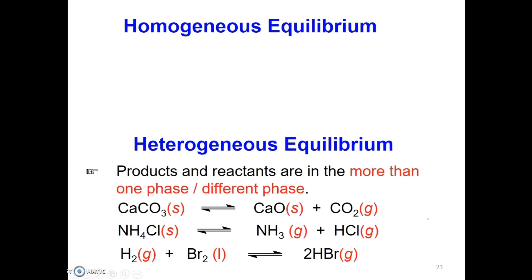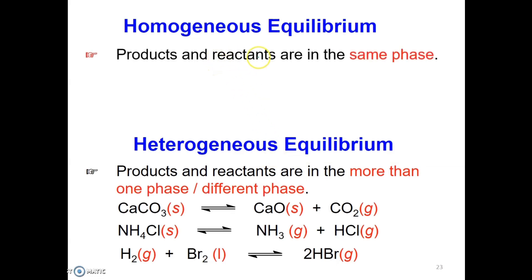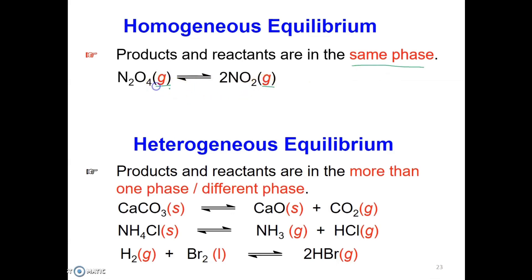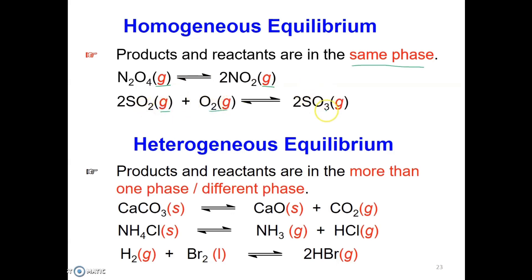Let's start with the difference between homogeneous equilibrium and heterogeneous equilibrium. For homogeneous equilibrium, the products and reactants are in the same phase. For example, N2O4 in the gas phase decomposes to form 2NO2, which is also in the gas phase. Or 2SO2 gas reacts with oxygen gas to produce SO3, also in the gas phase.